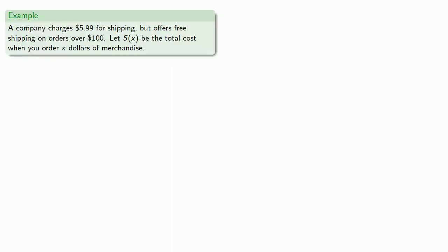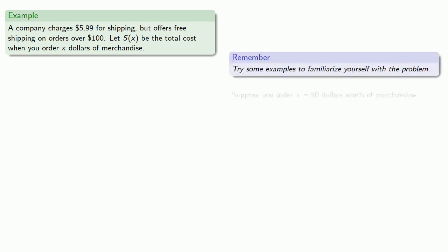For example, suppose a company charges $5.99 for shipping, but offers free shipping on orders over $100. Let S(x) be the total cost when you order x dollars of merchandise. A helpful strategy here is to try some examples to familiarize yourself with the problem. So suppose you order x equals $50 worth of merchandise. Then the total cost will be the cost of the merchandise plus the cost of shipping. The cost of the merchandise is $50, and since we have to pay for shipping on orders under $100, we have to pay that $5.99, so our total cost is 50 plus $5.99.